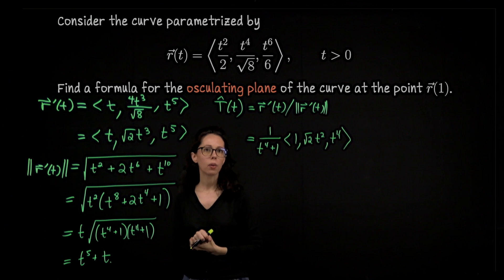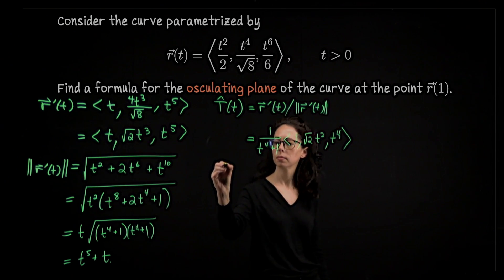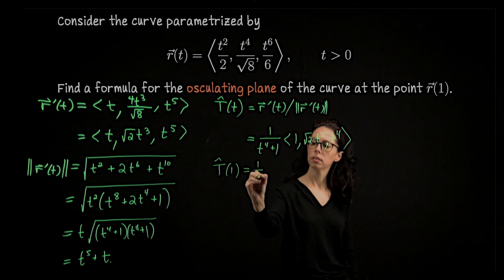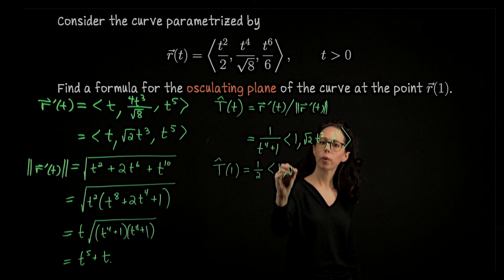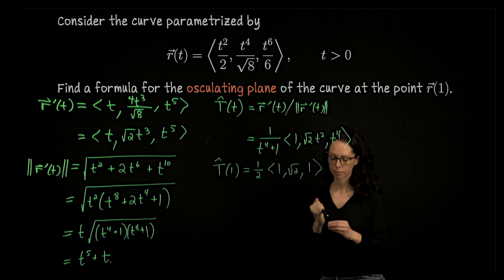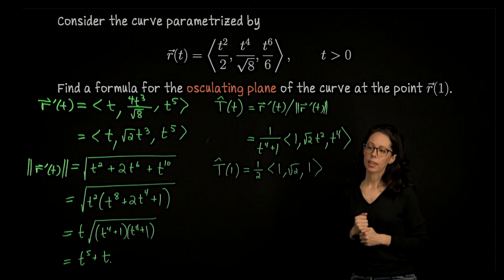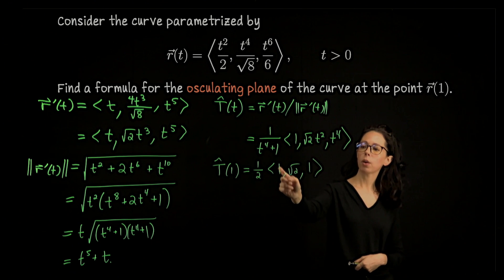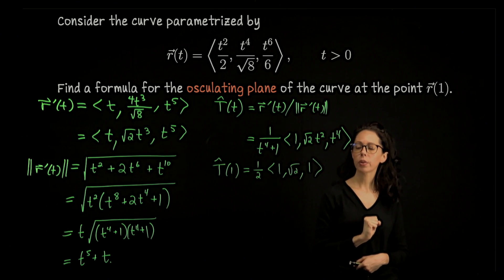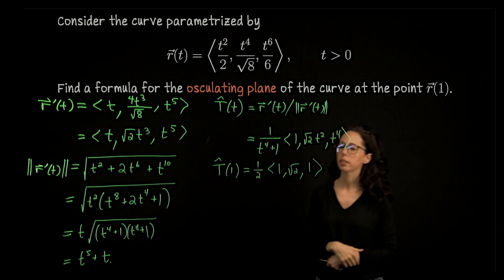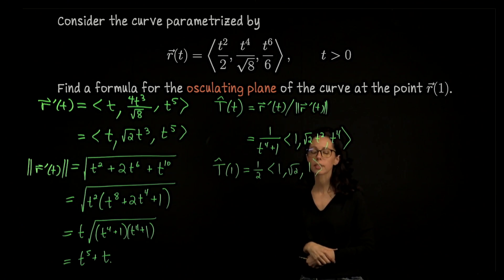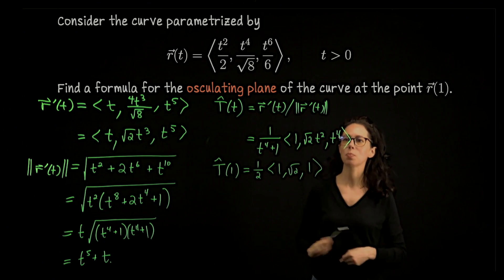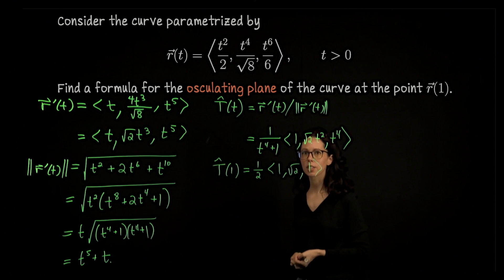When t=1, T̂(1) = (1/2)·(1, √2, 1). We can verify this is unit length: squaring the coordinates gives 1 + 2 + 1 = 4, whose square root is 2, and 2 × (1/2) = 1. So this is indeed a unit-length vector tangent to our curve.